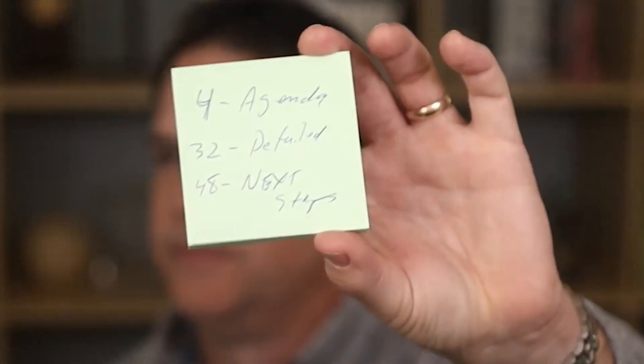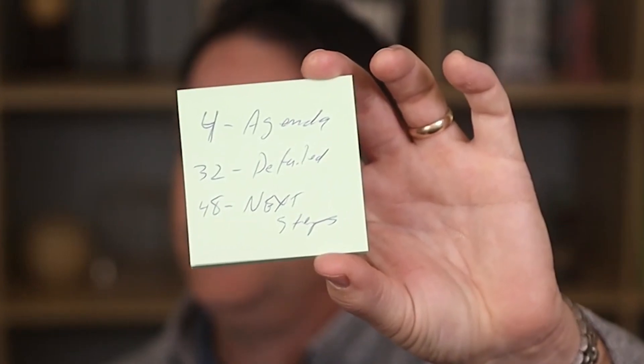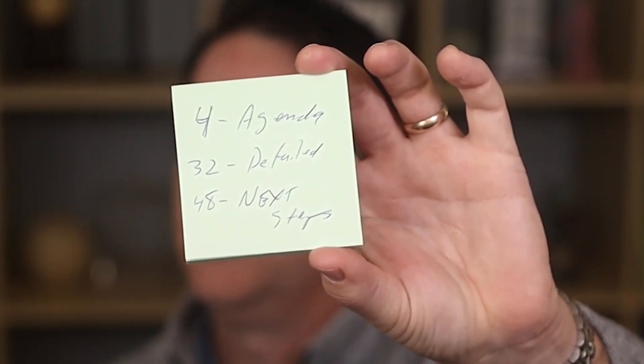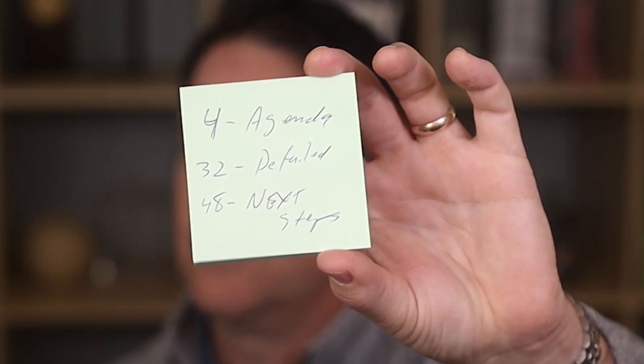So you've got a big, long presentation. What I want you to do is write down key slide numbers for various sections. For this presentation, let's say slide four is our agenda, slide 32 is our detailed pitch, and slide 48 is next steps. Simple, simple, simple.